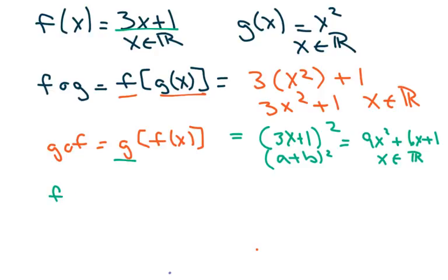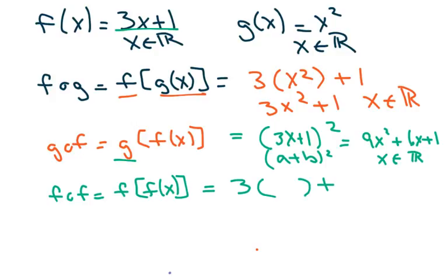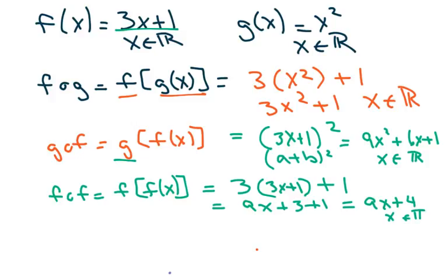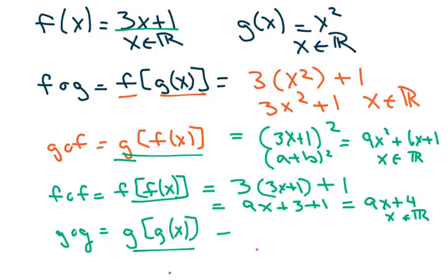Now f composed of f of x: I write down f, put parentheses where the x goes, and dump in 3x plus 1. You get 9x plus 3 plus 1, which equals 9x plus 4. And x belongs to all reals. For g composed of g of x, everywhere there's an x I input g of x, which is x squared — that makes it x to the 4th. And x belongs to all reals.